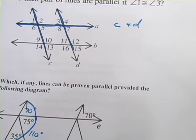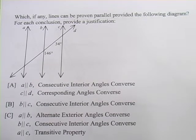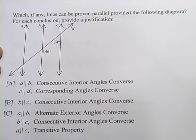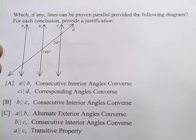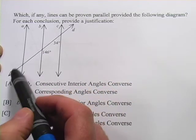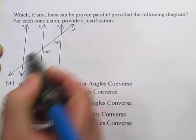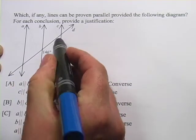All right, let's look at one more. This one says, which, if any, lines can be proven parallel, provided the following diagram. For each conclusion, provide a justification. So this time we have to decide what's parallel and then pick a converse that explains why. Well, we've got a little bit of information. We've got A, B, and C, which all look like they might be parallel. And then we've got D, which is obviously the transversal cutting through here. Then we've got a couple of angles, 146 and 34.